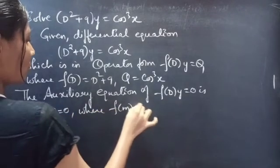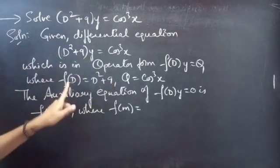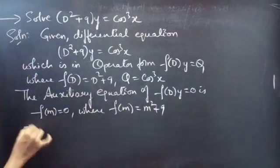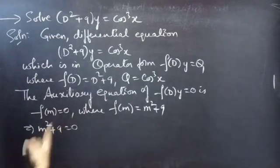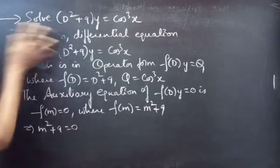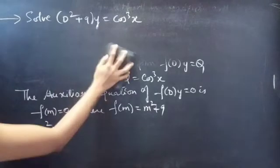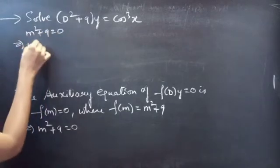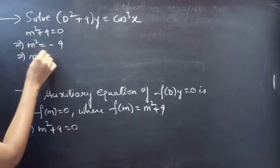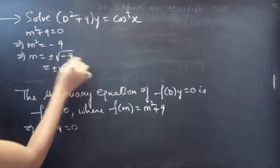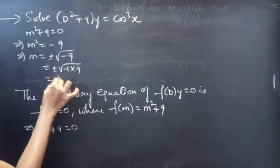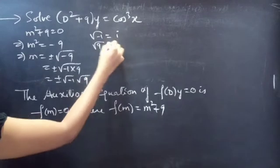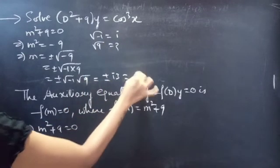Since f(D) = D² + 9, replacing the differential operator D by m gives f(m) = m² + 9. So the auxiliary equation becomes m² + 9 = 0. Taking 9 to the RHS: m² = −9, so m = ±√(−9) = ±√(−1·9) = ±√(−1)·√9 = ±i·3 = ±3i.